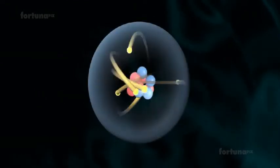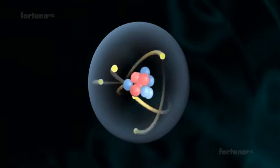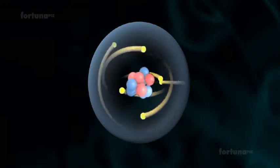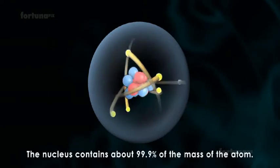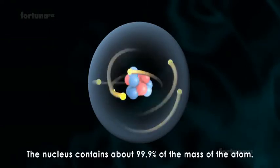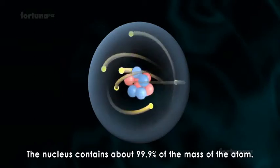An atomic nucleus is a dense entity at the center of an atom, around which negatively charged electrons orbit. The nucleus contains about 99.9% of the mass of the atom.